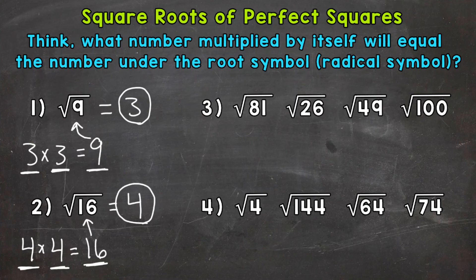Let's move on to numbers 3 and 4, where we have 4 square roots for each. Three of the four will have square roots of perfect squares, meaning they have a whole number answer, and one will not work out so nicely. Let's solve these and find which ones are the perfect squares and which one is not.